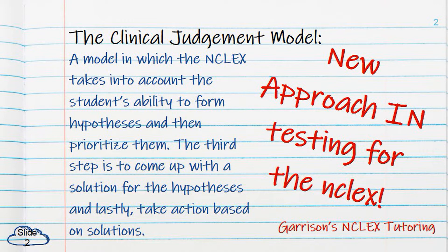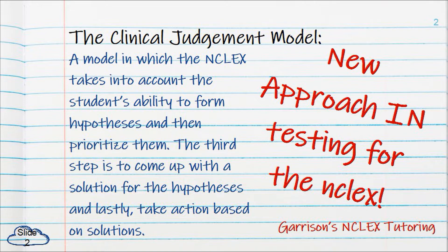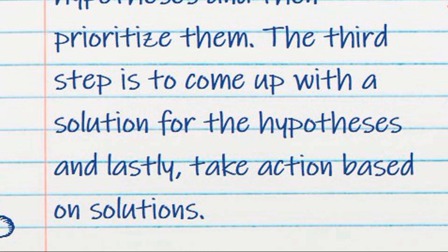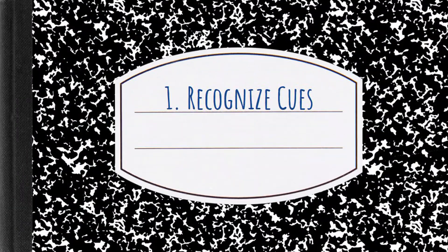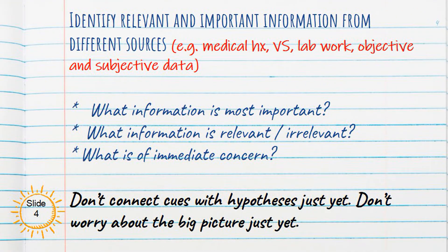What is the Clinical Judgment Model approach to taking the NCLEX exam? It is a model in which the NCLEX takes into account the student's ability to: number one, form hypotheses; then prioritize them. The third step is to come up with a solution for the hypotheses, then take action based on those solutions. You can't even begin to form a hypothesis about the question until you recognize cues. The process of recognizing cues is to identify relevant and important information from different sources such as the medical history, vital signs, subjective and objective data, and lab work. This is where we recognize cues that are about the question.